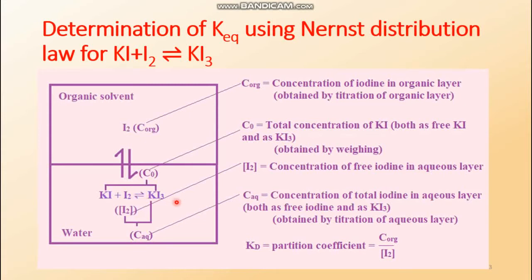To proceed, both solutions are titrated using standard sodium thiosulfate solution, which is a secondary standard standardized by potassium dichromate. This sodium thiosulfate reduces iodine to iodide, and an equivalent amount of iodine is titrated. The concentration of iodine can be determined from this titration using starch as the indicator.